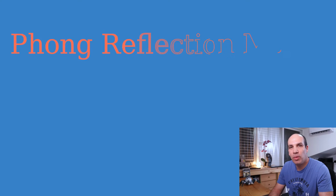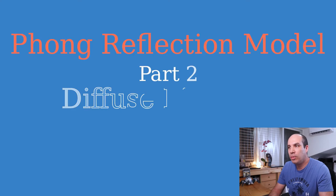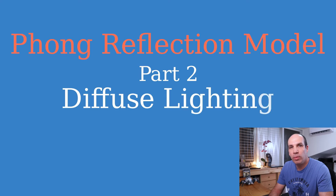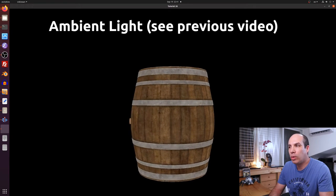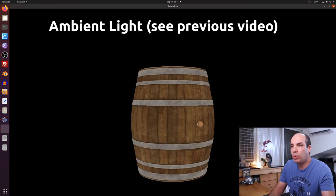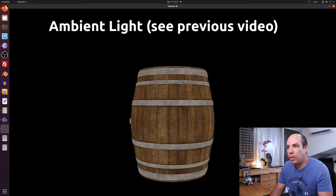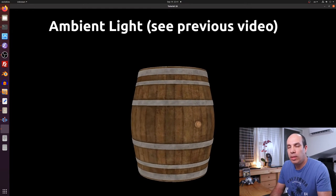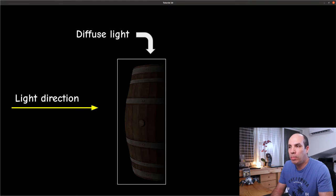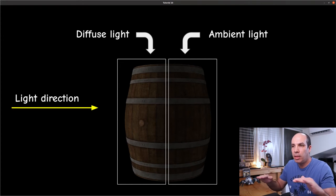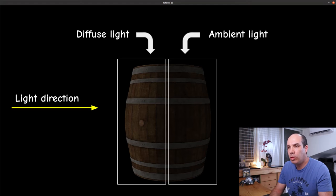Let's continue with the Phong Reflection model. Today we will focus on the diffuse component. We've already got ambient light working in the previous tutorial, which was very simple. The main difference between ambient and diffuse lighting is that the intensity of diffuse lighting depends on the direction of light. Ambient lighting is just a baseline lighting intensity applied to every pixel regardless of whether it is in light or shadow.